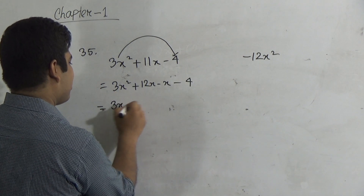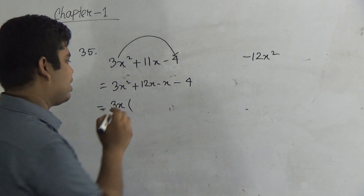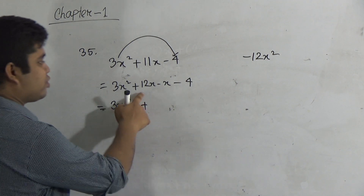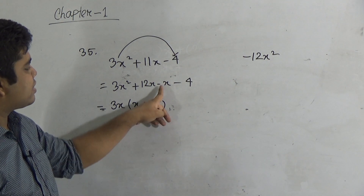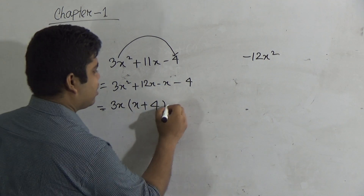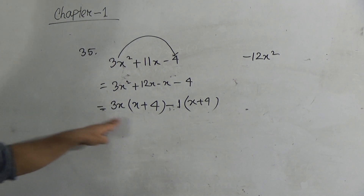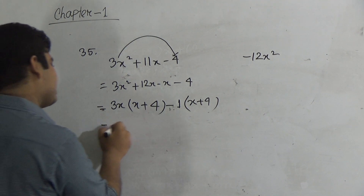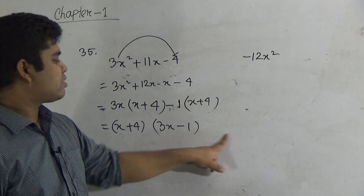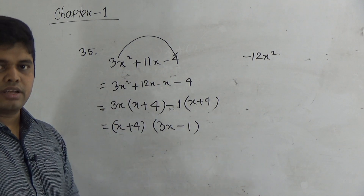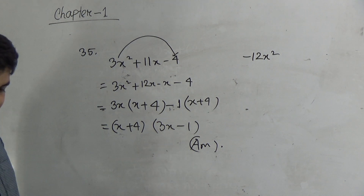From the first two terms, we take 3x as common: dividing 3x² by 3x gives x, and 12x by 3x gives 4, so we get 3x(x + 4). From the last two terms, minus 1 is common: we take minus 1 as common and get minus 1(x + 4). From the whole expression, (x + 4) is common and we get (x + 4)(3x minus 1). So x + 4 and 3x minus 1 are the factors. This is the answer.